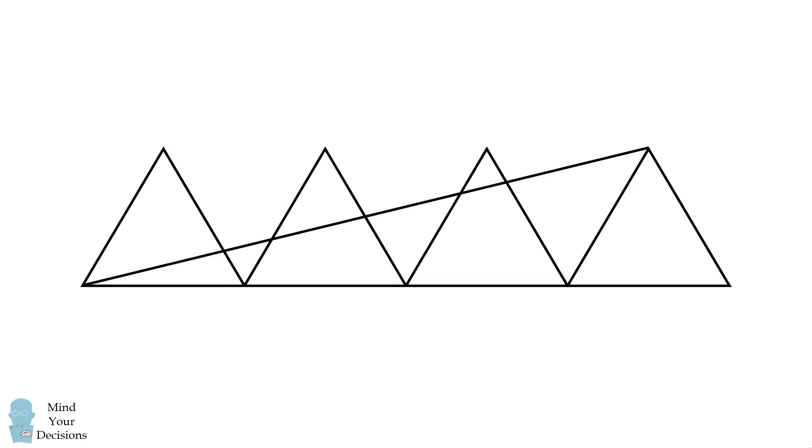To begin, connect a line segment between the top four vertices of these equilateral triangles. Because the equilateral triangles are congruent, corresponding sides will be parallel to each other. Therefore, the large triangle in yellow will be similar to the middle triangle in yellow, and it will be similar to the smallest triangle in yellow.